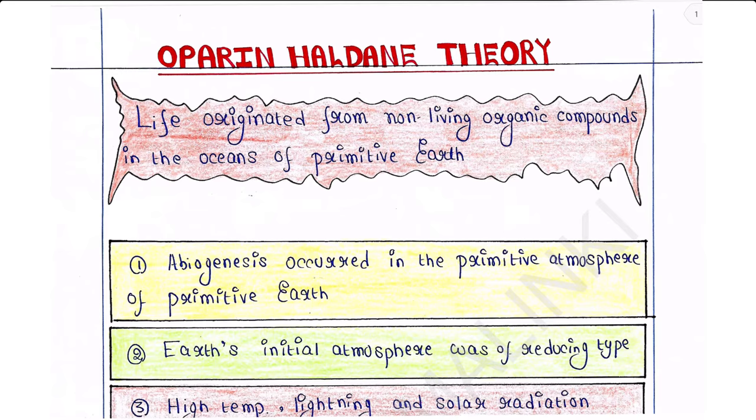Oparin-Haldane theory - this is the fifth and most acceptable theory of origin of life. In the last lecture we talked about the first four theories, and the link is provided in the description box. Two scientists, Oparin and Haldane, stated that life originated from non-living organic compounds in the oceans of primitive Earth.